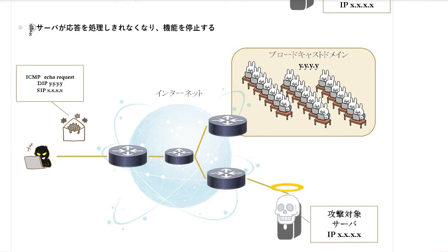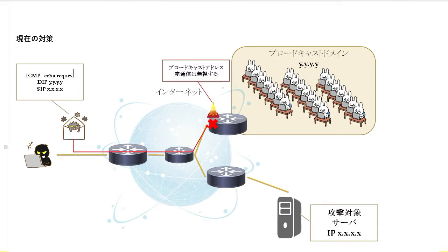今回はICMPエコーリクエストなので、聞こえていたら応答してくださいと言ったのが、このブロードキャストドメインに属する全てのホストから返ってくることになります。そして最後、サーバーが大量の通信が来て応答を処理しきれなくなり、機能停止になってしまいます。こんな流れですね。これがスマーフ攻撃です。